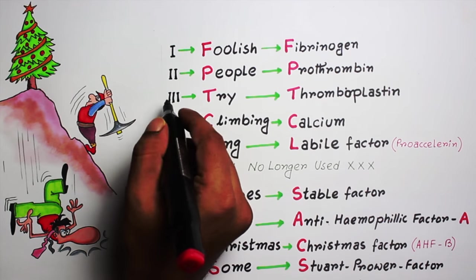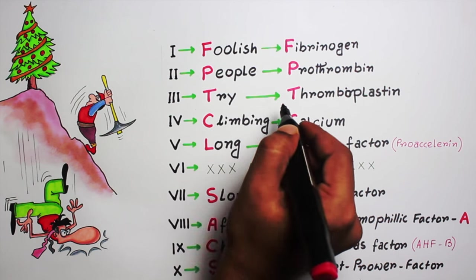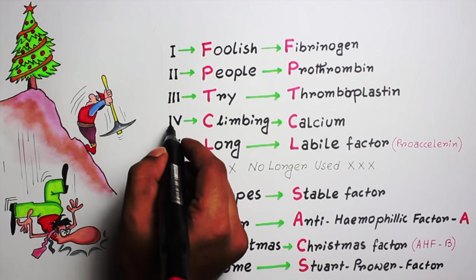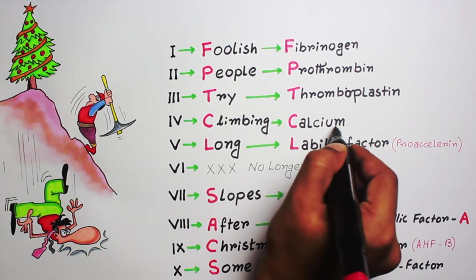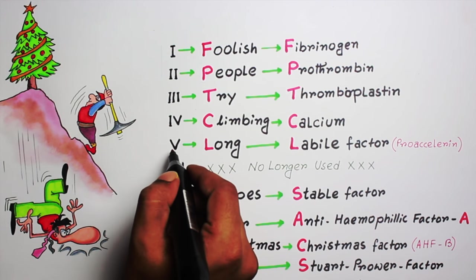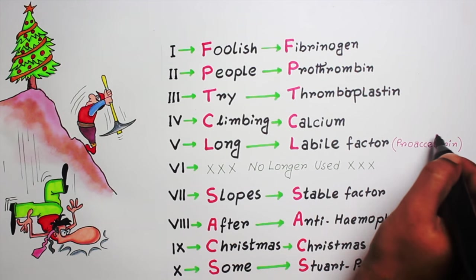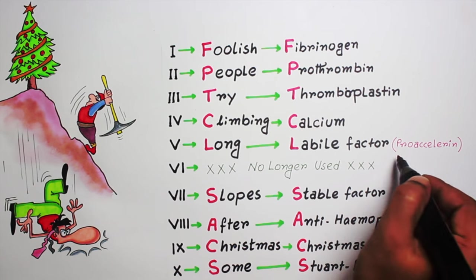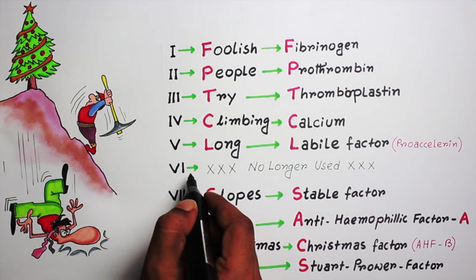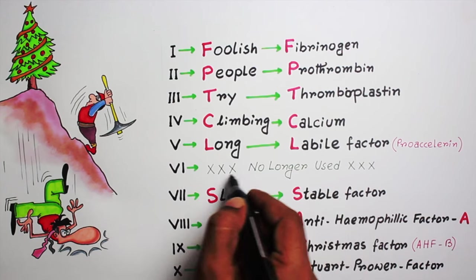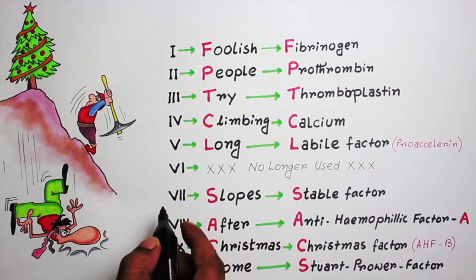Factor 4 — C for calcium; factor 5 — L for labile factor, which is also called pro-accelerin. Factor 6 is no longer used nowadays, so you can just ignore it.